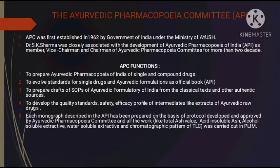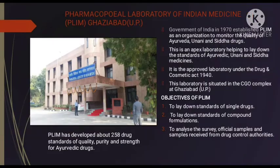Each monograph mentioned in the Ayurvedic Pharmacopoeia is developed by the Ayurvedic Pharmacopial Committee and approved with the help of various laboratories like PLIM. PLIM is the Pharmacopial Laboratory of Indian Medicine, situated in Ghaziabad. It was established by the Government of India in 1970 and is an approved laboratory under the Drug and Cosmetic Act of 1940.